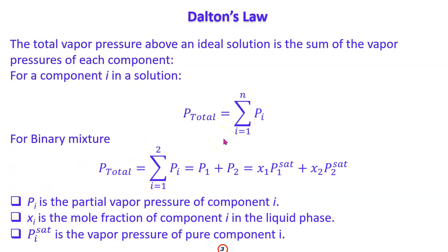The total pressure is the summation of all partial pressures. For an ideal solution, P_total equals the sum of partial pressures of each component. For a binary mixture (n=2), P_total equals P1 plus P2, which expands to X1 times P1_saturated plus X2 times P2_saturated, where X is the liquid-phase mole fraction and P_i_saturated is the pure component vapor pressure.